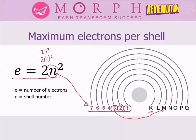The third shell (M shell) can accommodate a maximum of 18 electrons. Remember that shells are labeled using letters from K through Q only — not A, C, D, E, or G. So from K all the way to Q.